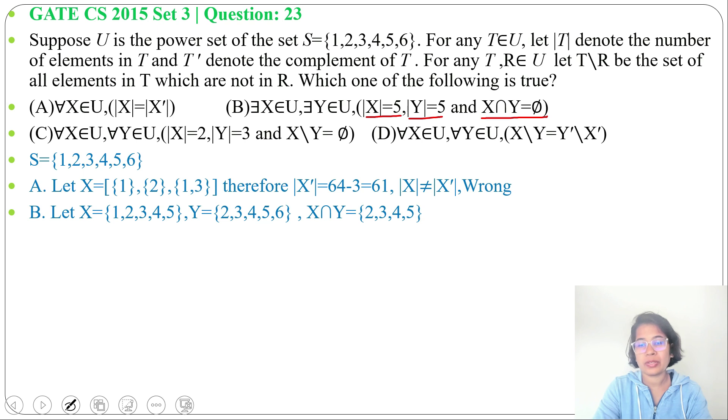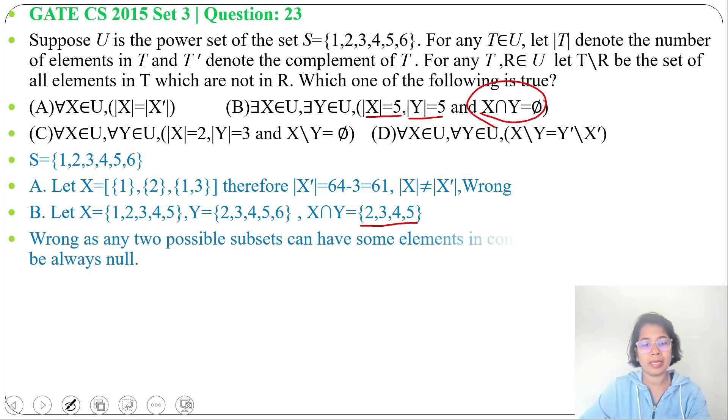Now, X∩Y. X∩Y contains {2, 3, 4, 5}. So, it's not 5, it contains 4 elements. So, here it's written X∩Y equals 5. This is false. It may contain some elements. So, X∩Y cannot be always null. This is wrong.